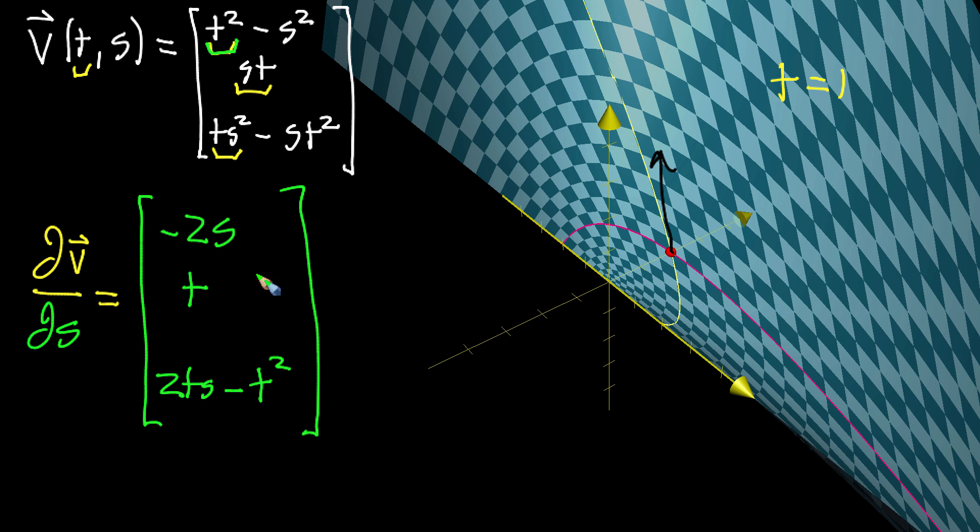Let's plug in the value (1, 1). This red dot corresponds to (1, 1). When S equals 1, we get negative 2. When T equals 1, we get 1. Then 2 times 1 times 1 minus 1 squared - that's 2 minus 1, which equals 1.